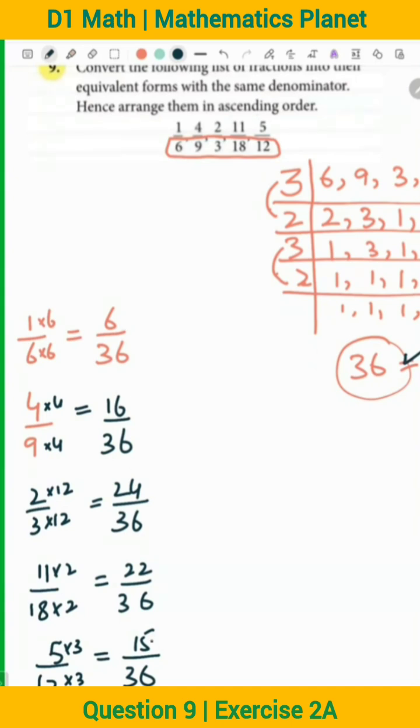So you have to arrange in the ascending order, means the smallest will come first. So which is the smallest one? 6 by 36 is the smallest one, which is actually 1 by 6. So you will write 1 by 6, which is less than 5 by 12. 5 by 12 is second. 15 is second, which is 5 by 12.